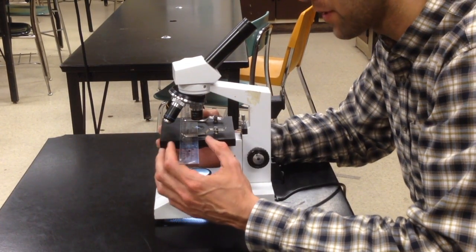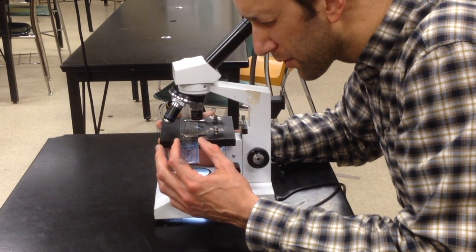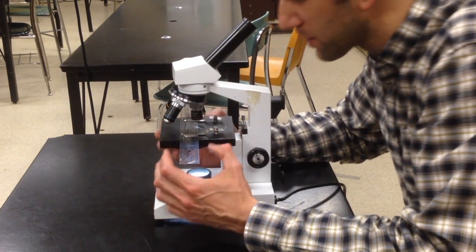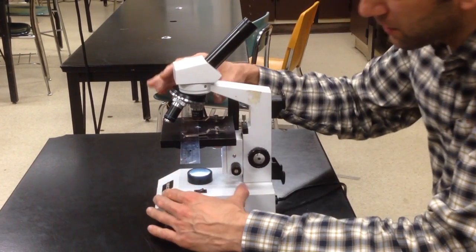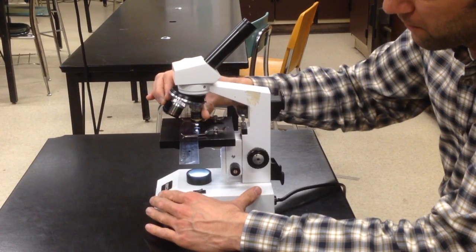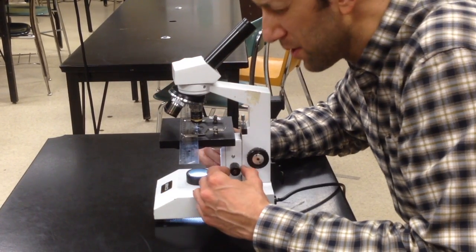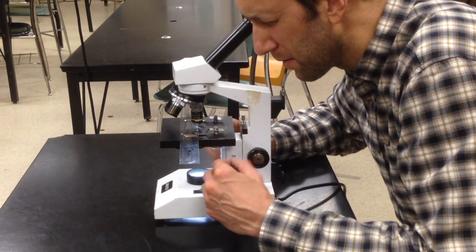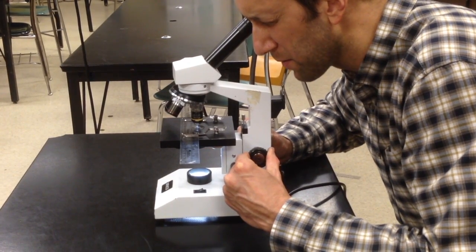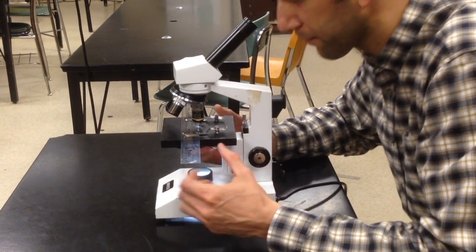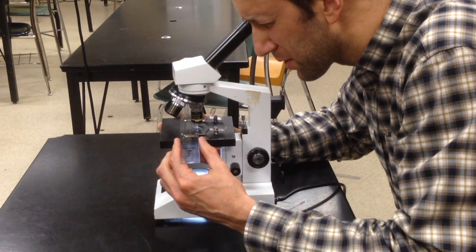The next step is to measure the diameter of the field of view under medium power. What we're going to do is make sure that we're centered and focused, and we'll switch our microscope to medium power. You should only have to fine-tune it at this point a little bit, using either the coarse or the fine adjustment.